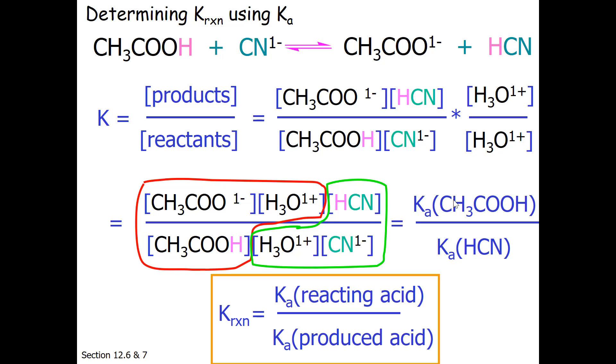Now here is the piece that annoys students. I started off my equilibrium expression correctly, products divided by reactants. Because of the definition of what Ka is for an acid base reaction, K reaction is going to be equal to Ka of the reacting acid divided by Ka of the produced acid. That seems upside down to you. It isn't. It is correctly derived.